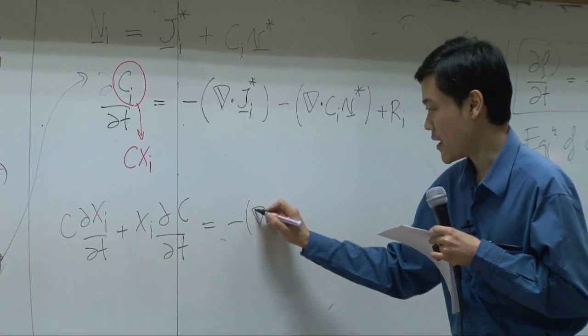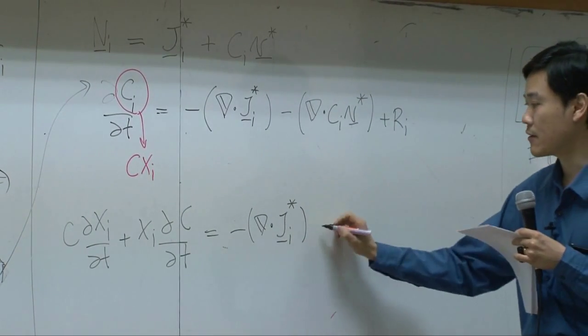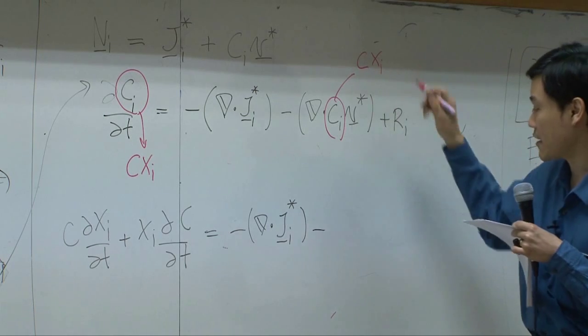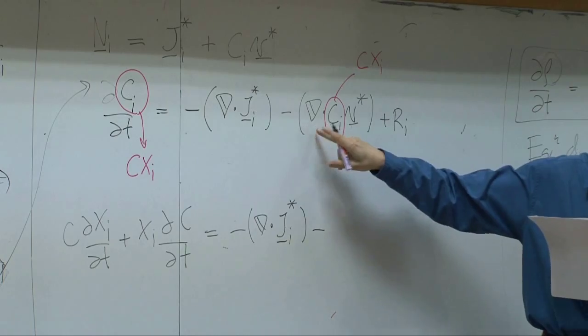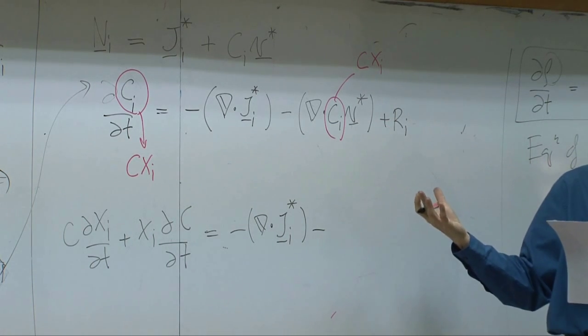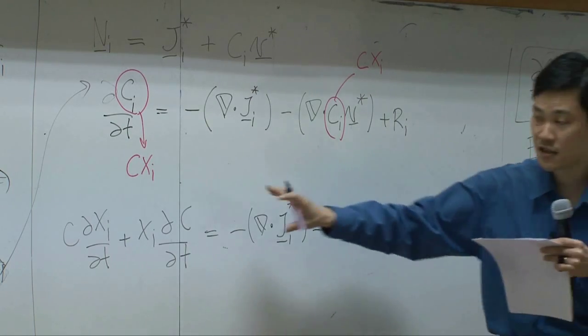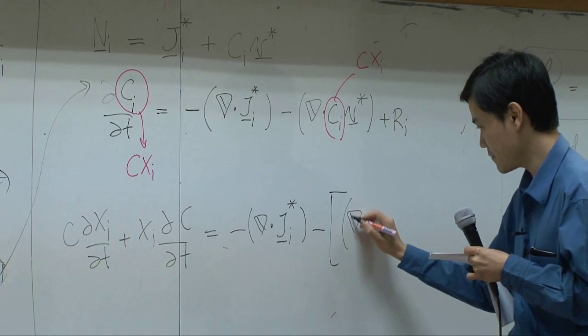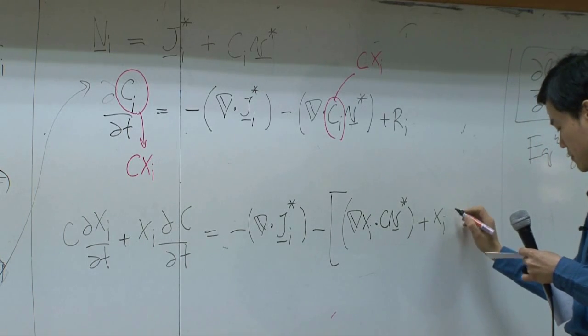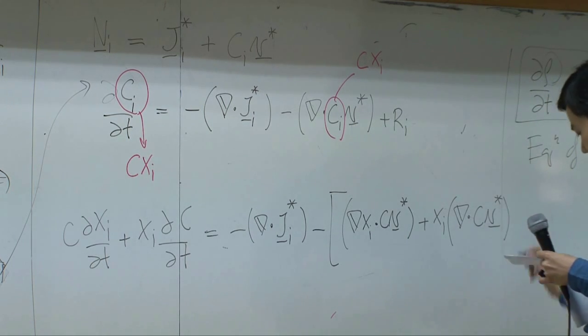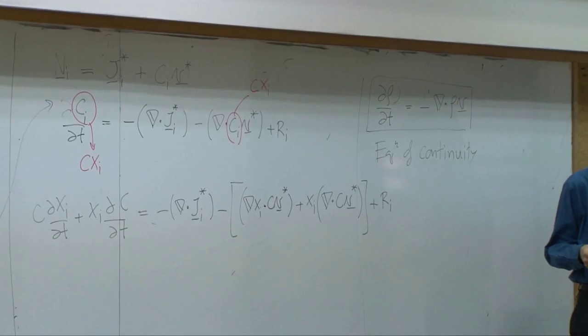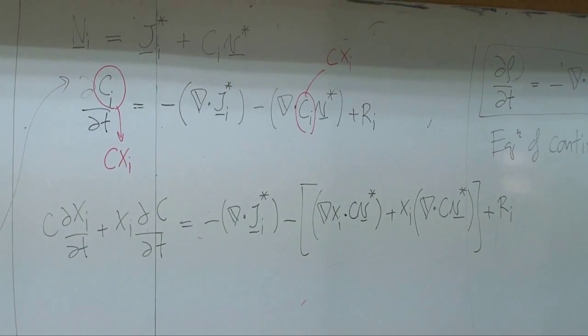First term on the right hand side remains the same. Second term here, once again, Ci is C times xi. Del itself is like differentiation. So you have del of the product. You can split it in two terms, just like udv and vdu, just like this part.